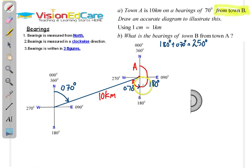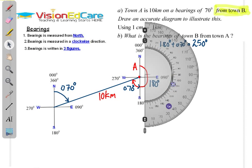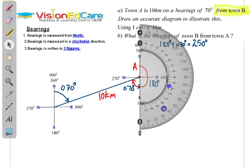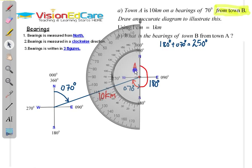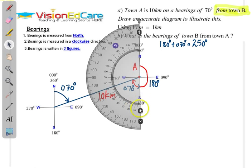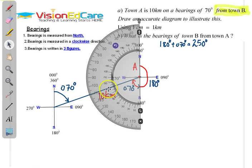We are going to use our protractor and do the measurement as well. We know that all of this angle here is 180 degrees, so we just need to measure the remaining angle onwards. We already have 180, so all we have to do is count onwards and see if we get 250 degrees. 180 is here — 190, 200, 210, 220, 230, 240, 250 degrees — which is accurate to what we have done mathematically. So we have done the question.